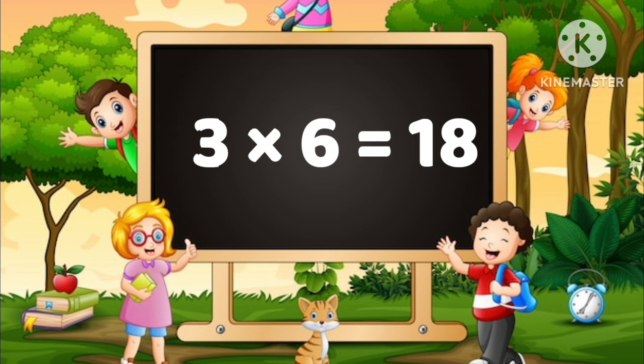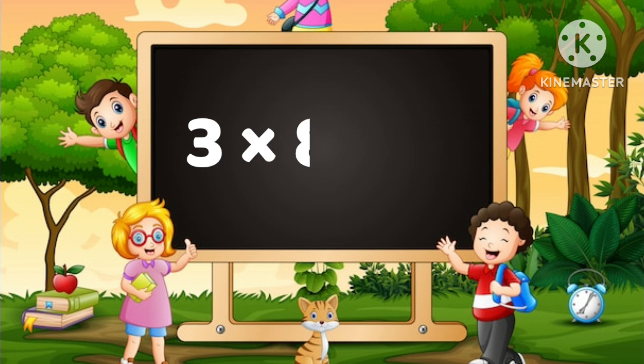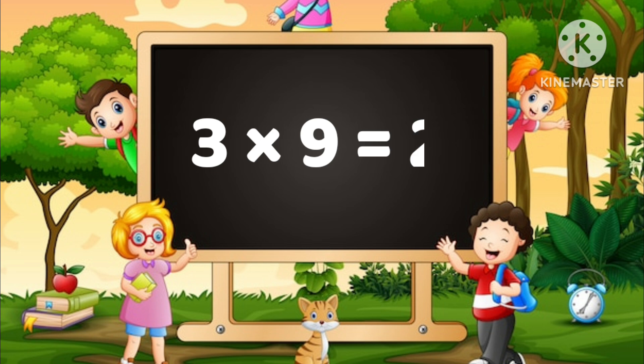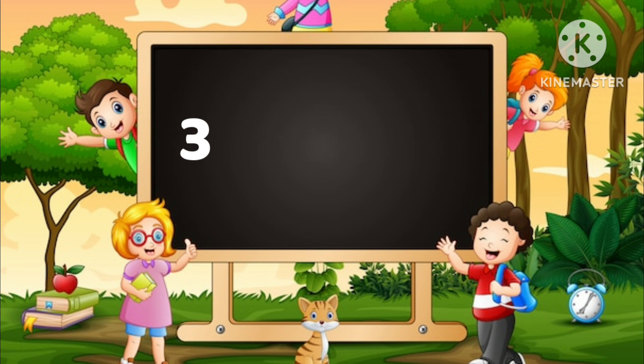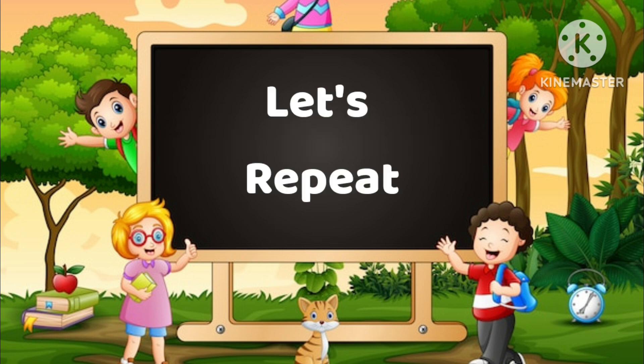3 times 7 is 21. 3 times 8 is 24. 3 times 9 is 27. 3 times 10 is 30. Let's repeat.